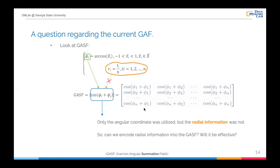So can we improve the GAF by any means? With having this question, let's look at the current GAF. For example, the GASF. As we can see in the GASF matrix, only the angular coordinate was utilized, but the radial information was not. But the radius contains temporal information transformed from the original time series as well. So there are two questions. First, can we find a way to encode radial information into the GASF? Second, will it be effective?